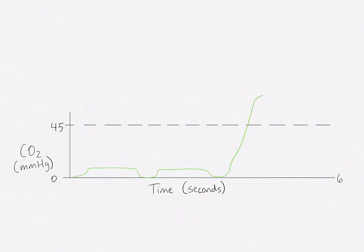If during the code, the end tidal reading rapidly increases to over 45 mmHg, return of spontaneous circulation has been achieved. This spike in end tidal occurs because the body has been accumulating CO2 due to reduced perfusion from only compressions. Suddenly, the heart kicks in and begins perfusing blood at a greater rate, releasing the built-up CO2.